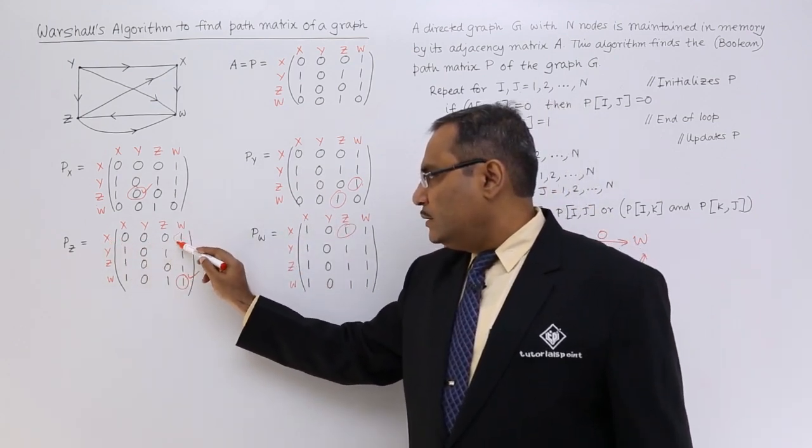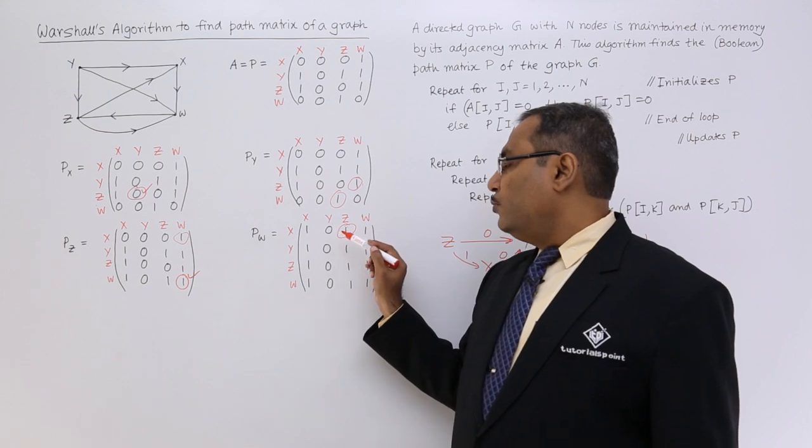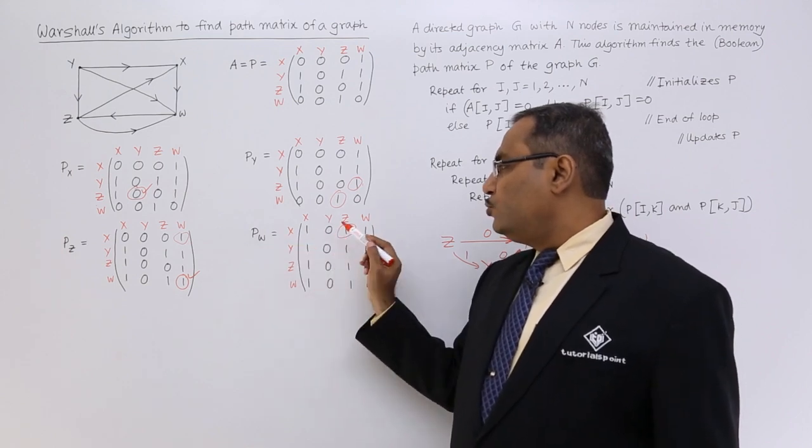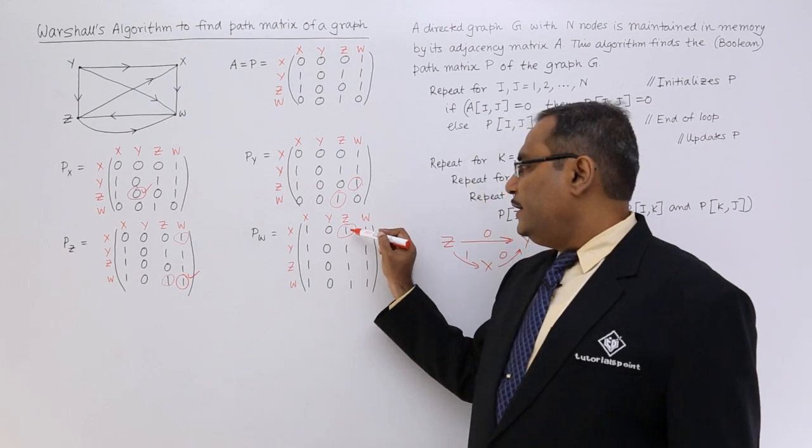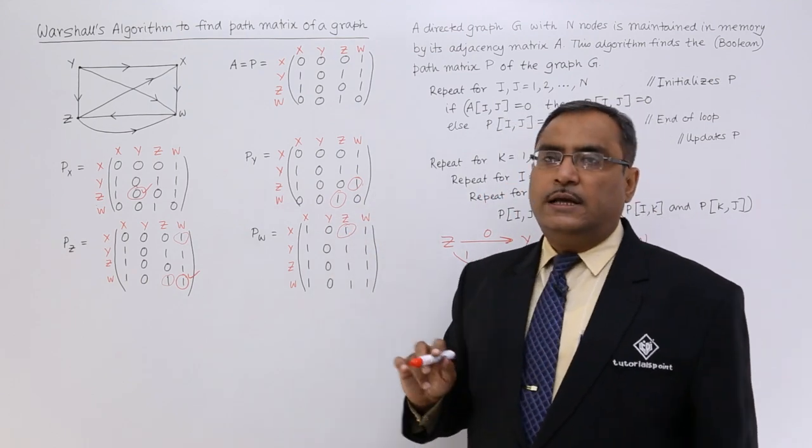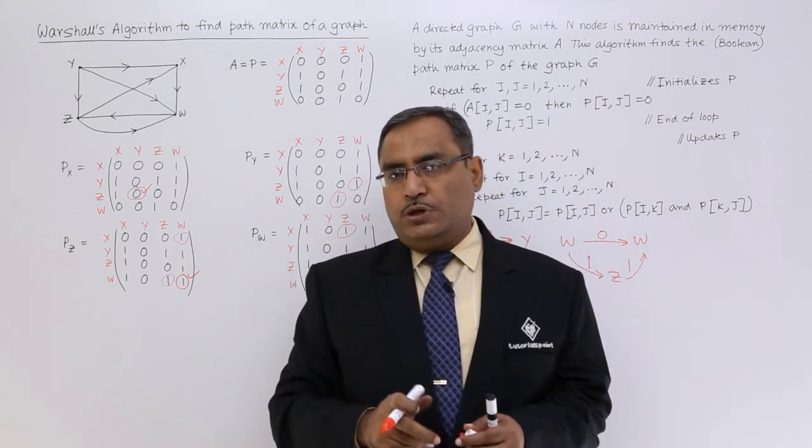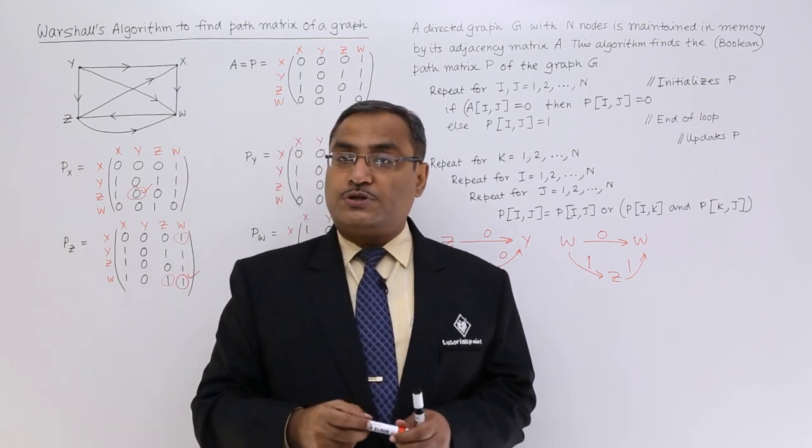x to w is 1, so I am highly optimistic, and then I am going for w to z. w to z is 1. It indicates that it will be 1. This is my final path matrix and that is the output, that is the return from this Warshall's algorithm.